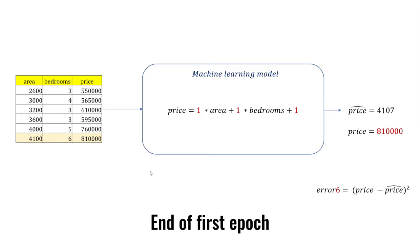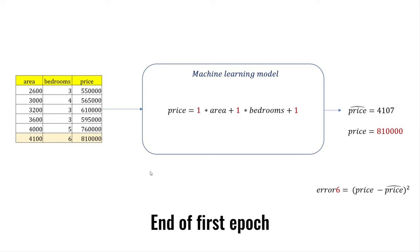When you are done going through all the samples, it is called the end of an epoch. At the end of the epoch, you sum all the errors and take the average, which is called mean squared error. After that, you adjust the weights using the derivatives.